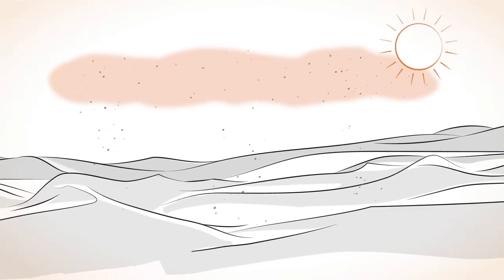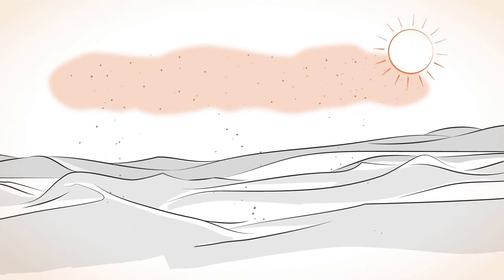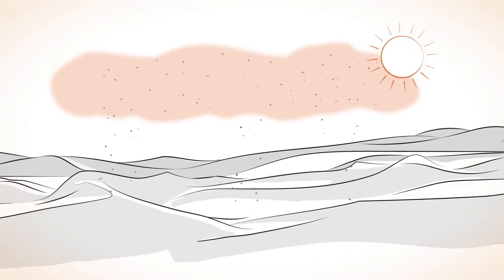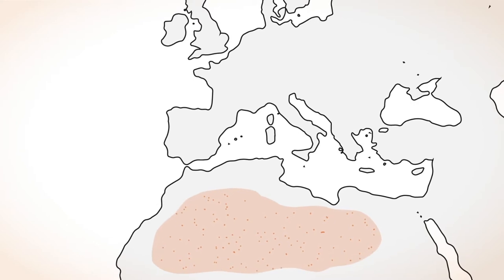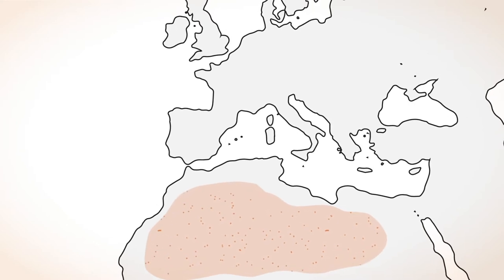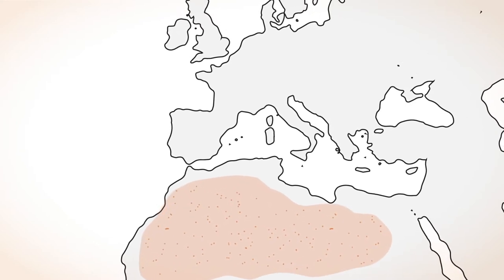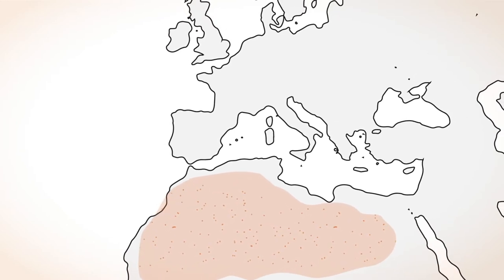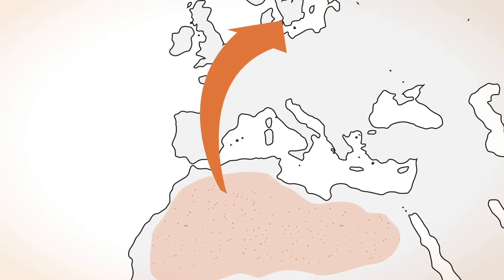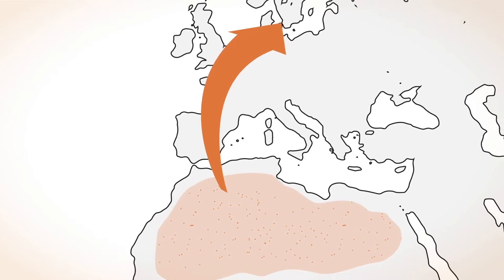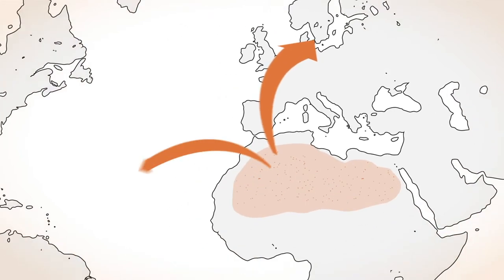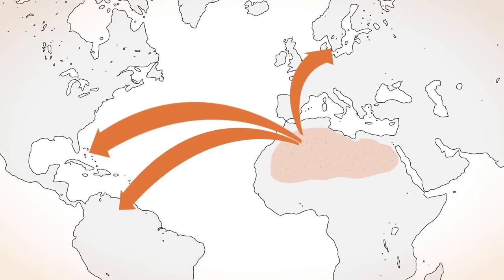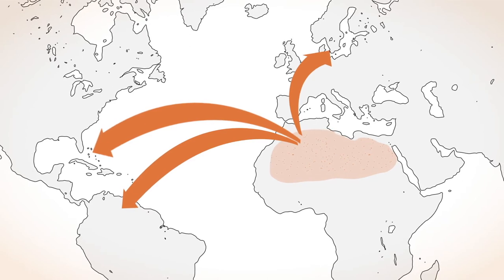The finest dust particles can be transported over long distances from the sources by the winds. Saharan dust, for instance, arrives frequently to southern Europe. But it can cross the continent and reach the UK and Scandinavia, or move westerly to the Caribbean.